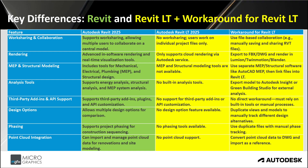MEP and structural modeling: the full version includes tools for mechanical, electrical, plumbing, and structural design, as well as steel, precast, and fabrication tools. Revit LT does not have MEP and structural modeling tools available — you do have a structure tab with a few tools such as a foundation for a wall. The workaround for Revit LT is to use separate MEP or structural software like AutoCAD MEP, then link the files into Revit LT as a DWG file.